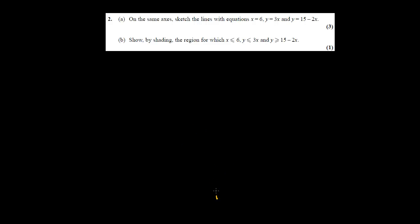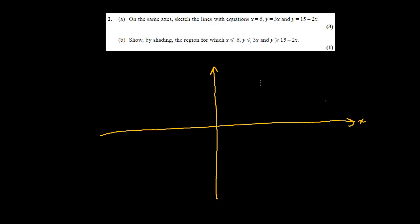This question is about sketching, so it falls under coordinate geometry. We have to sketch x = 6, which is a vertical line, and y = 3x, which is a line through the origin. Let's draw the y-axis, x-axis, and origin. For part A, we sketch x = 6 — a vertical line — and label it.